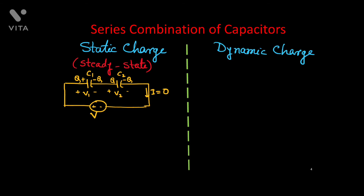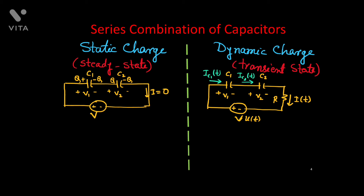Now for dynamic charge, where charge is varying with time — this is also called transient state — here you see with these two capacitors C1 and C2 there is one more resistance connected in series with the voltage source V. So current IC1 and IC2 should be the same, but the voltage across C1 and C2 will be different.